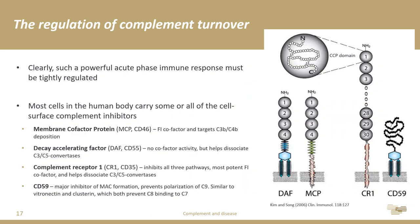Clearly, with such a powerful acute phase immune response, it is incredibly important for it to be tightly regulated. Virtually every cell in your body carries an array of different complement inhibitors to prevent inappropriate activation. For example, you have membrane-bound complement inhibitors such as the membrane cofactor protein MCP, also known as CD46. MCP acts as a factor I cofactor that targets C3B or C4B deposition and allows factor I to cleave it.